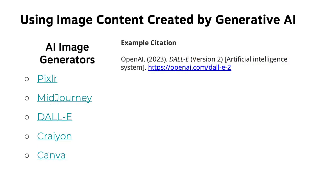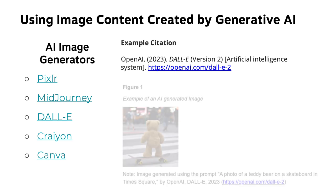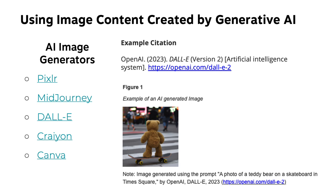Another possibility is to use image content created by Generative AI. There are all kinds of image generators out there, such as Pixlr, Midjourney, DALL-E, Crayon, and Canva. If you do end up using one of these tools, make sure that you cite the tool and are very clear that the image was generated. You can see an example of a citation here, as well as how you would give credit to the image generator tool that you used. Notice that it also includes the prompt that was used — in this case, a photo of a teddy bear on a skateboard in Times Square.